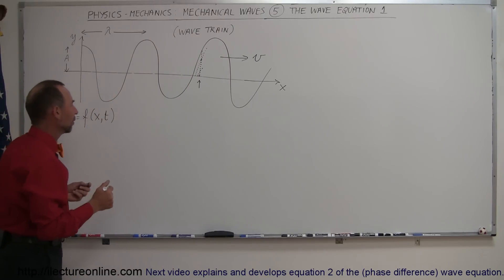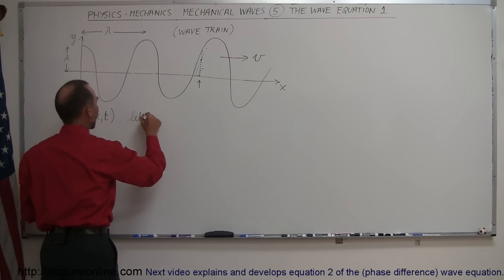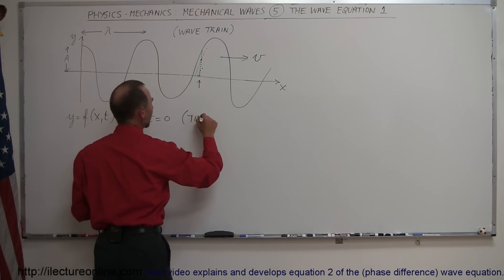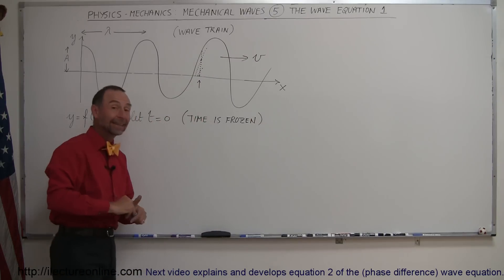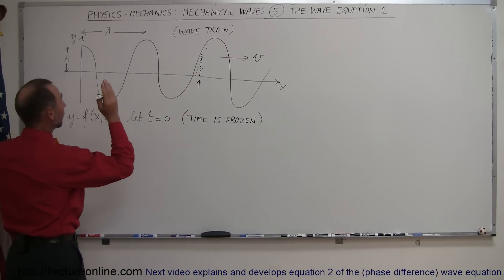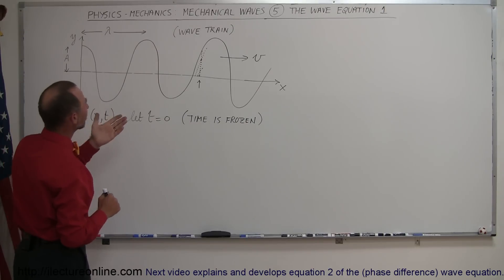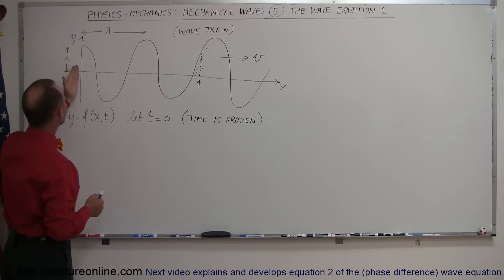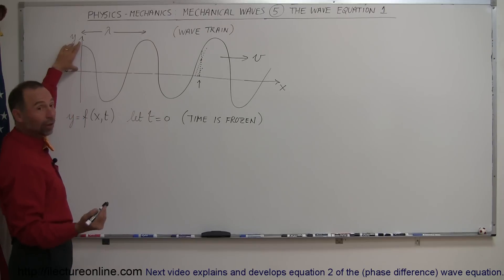To make things simpler, let's set time equal to zero — time is frozen at this moment when the wave is right here. What does that wave look like? It looks like a sine or a cosine function. Since at time equals zero the amplitude is at its maximum right here, that looks like a cosine function.